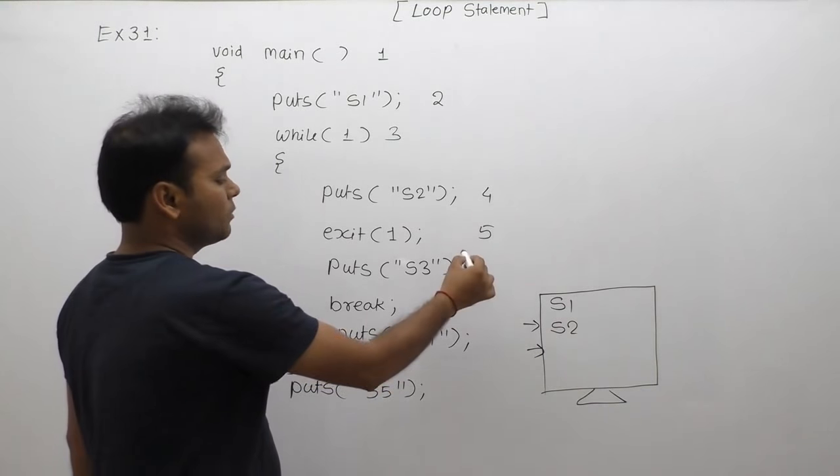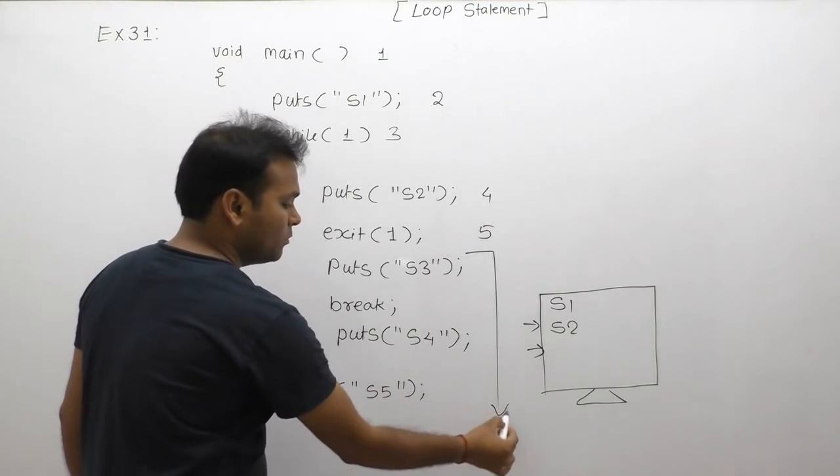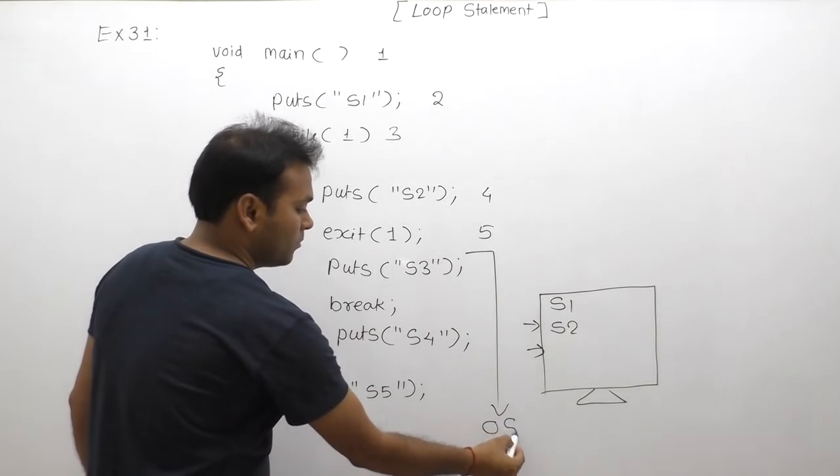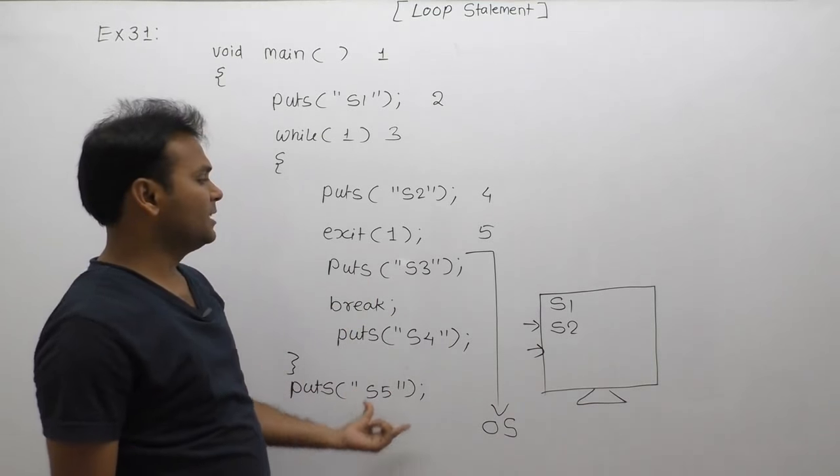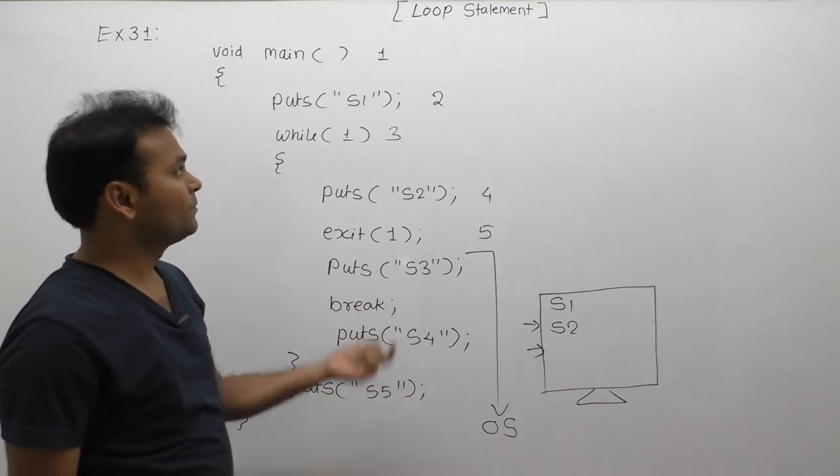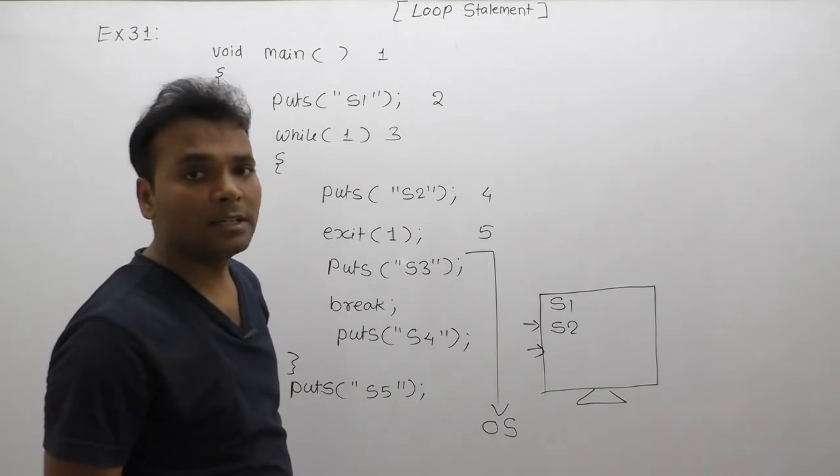Control is immediately sent back to the operating system. The remaining part checks for syntactical mistakes, validates them. Find the output - s1 and s2.